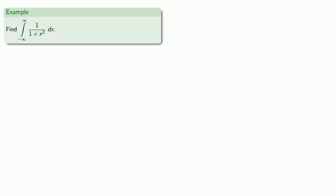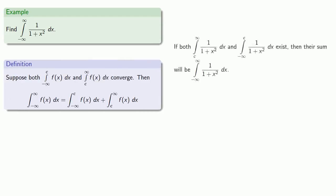For example, consider this integral. Our definition says that if the integral from c to infinity and from minus infinity to c both exist, then their sum will be the integral from minus infinity to infinity. But what's c? To find out, we'll use a time-honored academic tradition. Procrastination. We won't worry about c until we need to.